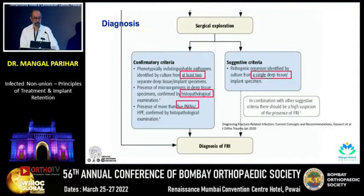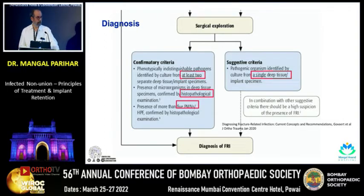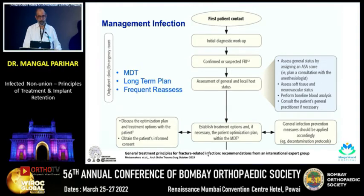At least two swabs or specimens coming out positive, histopathology examination showing positive signs for infection, and five PMNs per HPF — these are now the confirmatory signs for infection. But even if there is a single positive, especially in our situation when patients have been bombarded with antibiotics, that can be taken as a suspicion. In combination of all of this, you come to the diagnosis of an FRI, and this is the algorithm they have given.